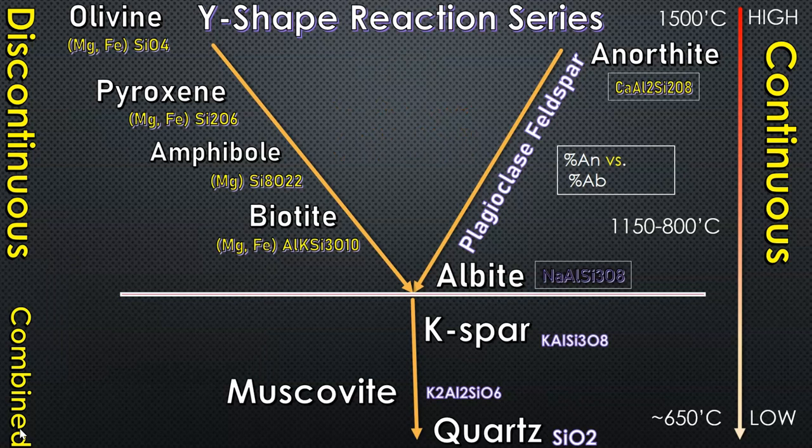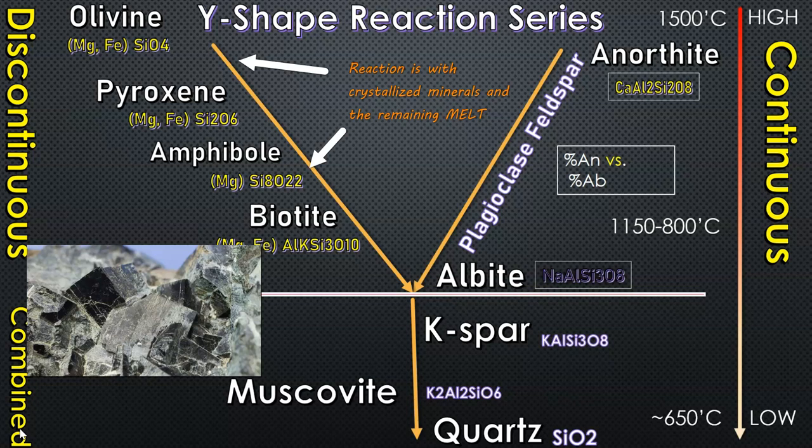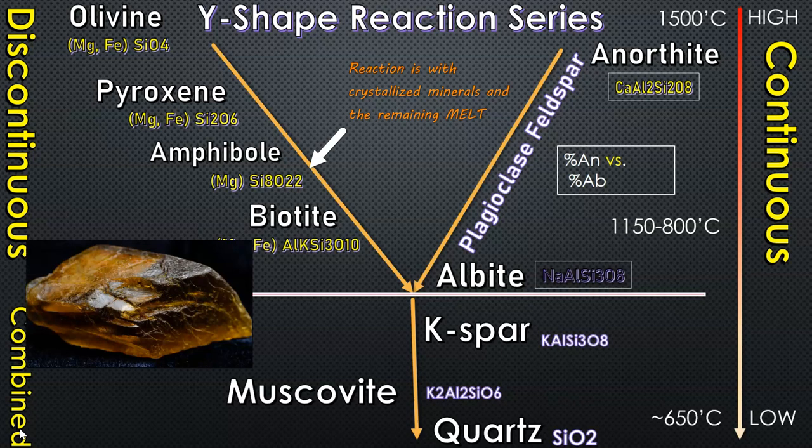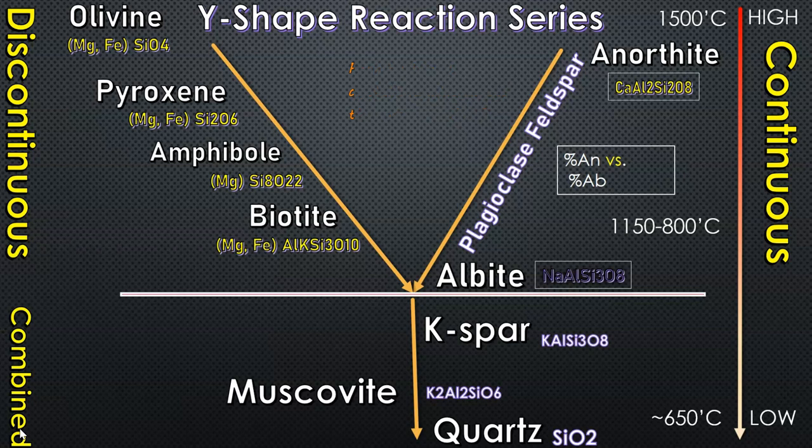The olivine gets melted back into the magma and combined with silica, which forms pyroxene. That in turn melts and links with more silica in the magma to form amphibole, and finally biotite at the colder temperatures. As you can see, the silica tetrahedra becomes more and more advanced through polymerization and the addition of magnesium or iron in this discontinuous range.